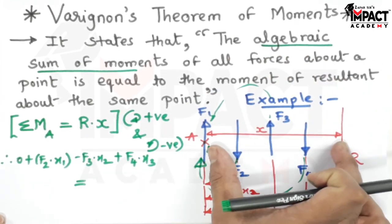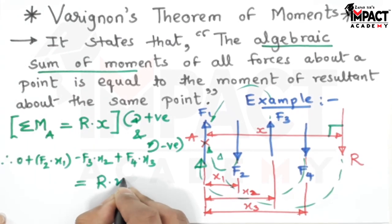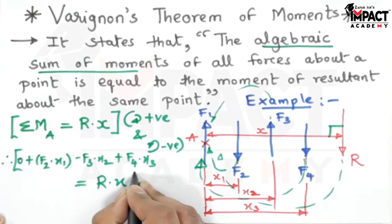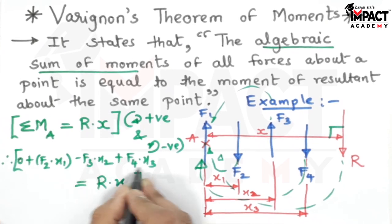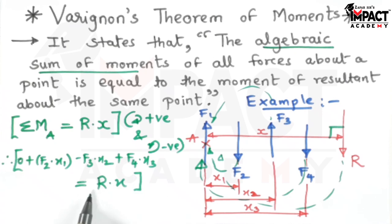So it is R into the distance is X, because moment is force into perpendicular distance, so R into X. Now by using this formula, if all the distances are known, that is X1, X2, X3, all the forces are known including the resultant, we can calculate its location by finding this value of X.